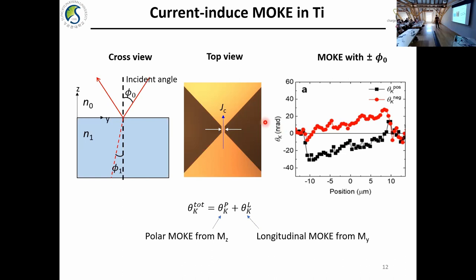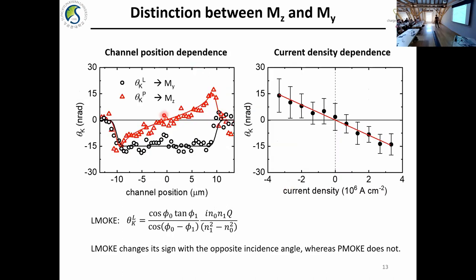This is the model result with scanning along the channel. Depending on the incident angle — positive or negative — we have somewhat different measurement results. This is because in this geometry we have two components. One is the polar mode, which measures the out-of-plane magnetization. The other is the longitudinal mode, which measures the y-component of magnetization. We can easily distinguish the y-component and the z-component because only the longitudinal mode changes sign with incident angle, while the polar mode does not change sign. All signals are linearly proportional to the applied current.